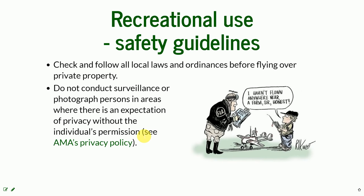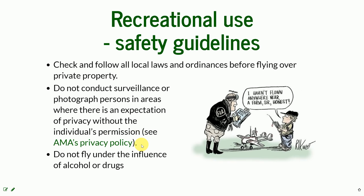It is illegal to conduct surveillance or photograph persons in an area where an expectation of privacy exists without permission. You can find more about that in the privacy policy published by the FAA. You do not want to harass people or use the camera or UAS in places where you would not go with your own eyes, where privacy is expected. This also applies to pilot proficiency — if you fly under the influence of alcohol or drugs, your proficiency is impaired, and it is forbidden to operate any vehicle under the influence of such substances.